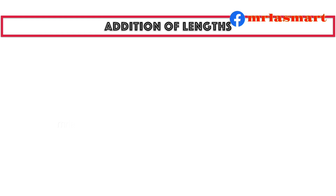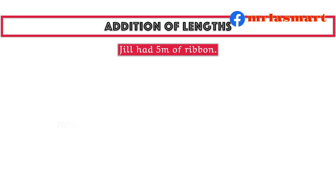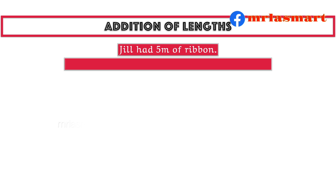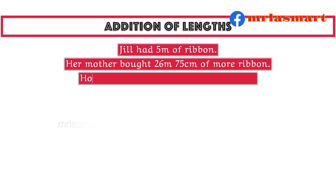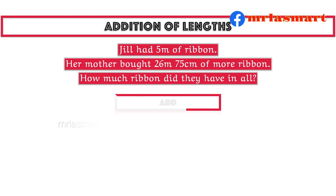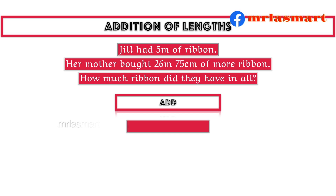Addition of lengths. Jill had 5 meters of ribbon. Her mother bought 26 meters 75 centimeters of more ribbon. How much ribbon did they have in all? Add 5 meters and 26 meters 75 centimeters.